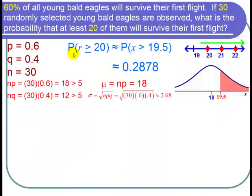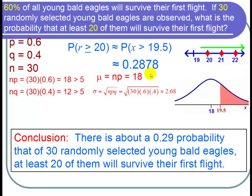So the probability that r is greater than or equal to 20 is about 0.2878. So I can conclude that there is about a 29% probability that of the 30 randomly selected bald eagles, at least 20 of them will survive their first flight. I'm done with the problem. Thank you.